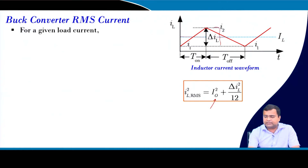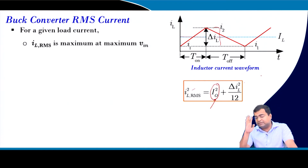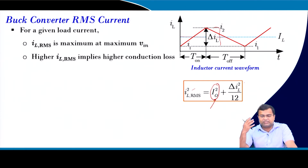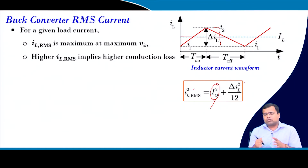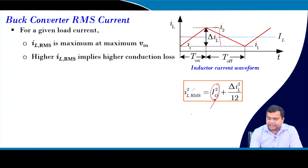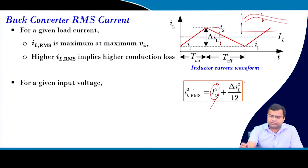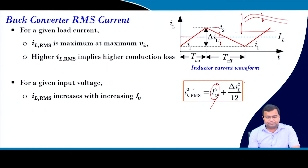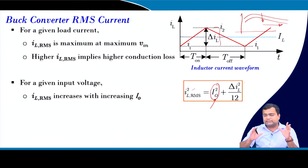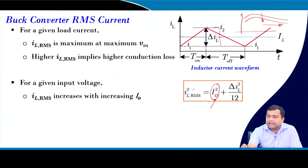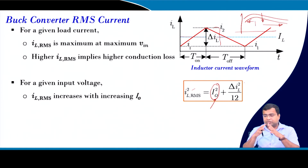For a given load current, the RMS current is worst when ripple is maximum, i.e., at maximum input voltage, leading to higher conduction losses. In commercial efficiency curves you will find efficiency slowly decreases at higher input voltages due to more conduction and switching losses. For a given input voltage, RMS current increases with load current, so efficiency falls on that side due to conduction loss dominance, while at light load it is dominated by switching loss. The peak efficiency occurs where losses are minimized.